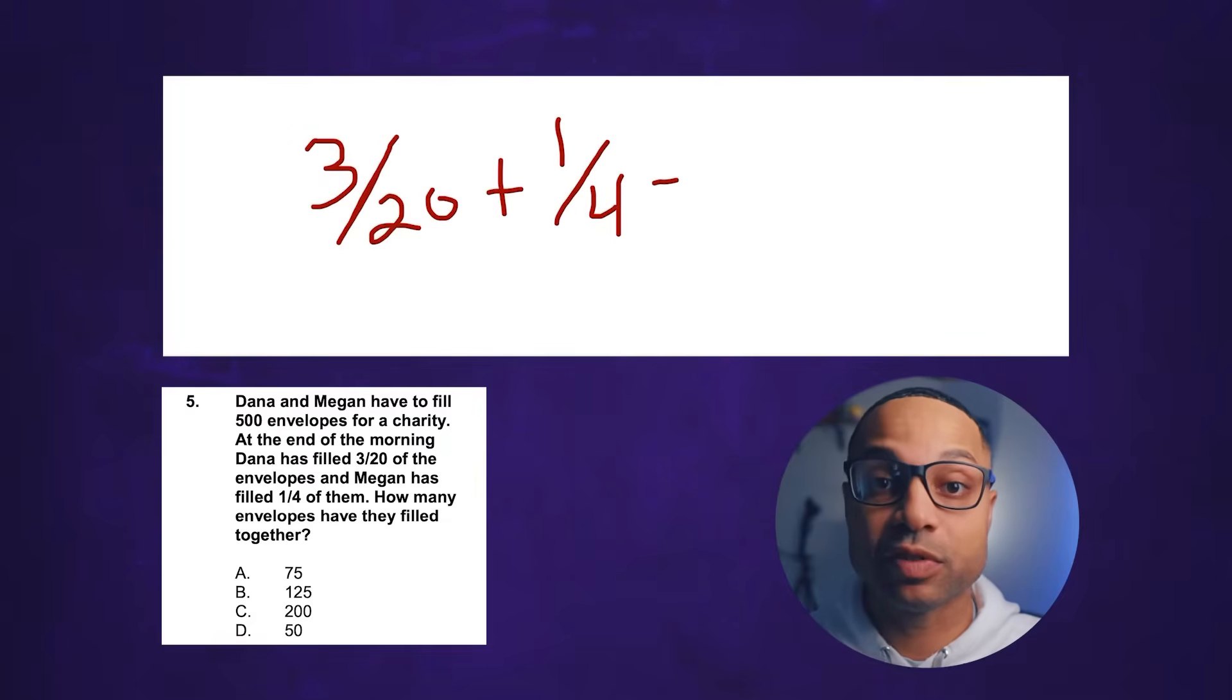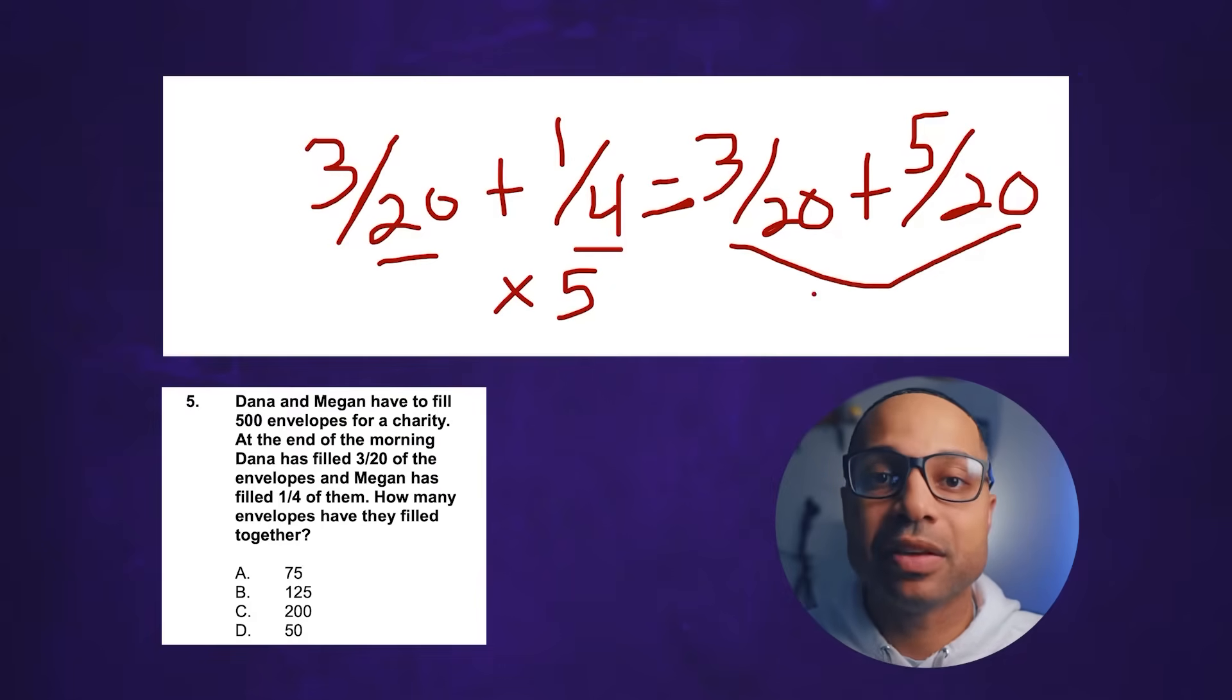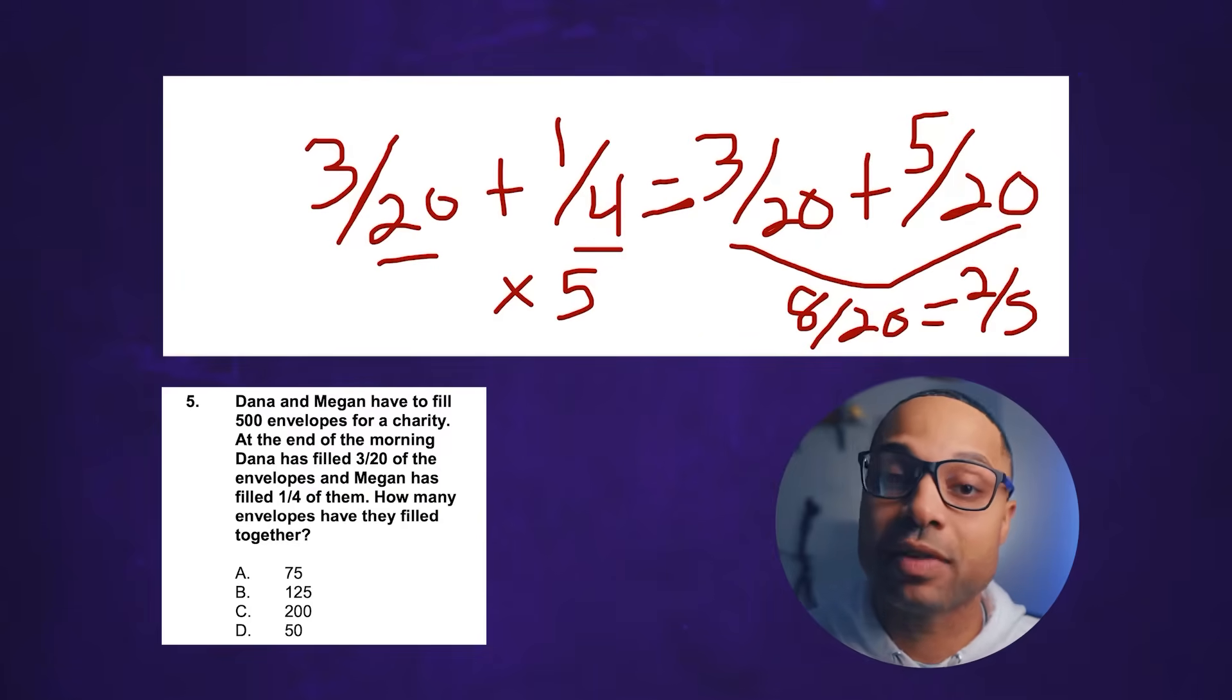So if you try to add 3/20 plus 1/4 it doesn't work. So you have to find a common denominator for each. The common denominator for 20 and 4 is going to be 20. In order to make 4 turn into 20 we have to multiply it by 5. Not only do we have to multiply the 4 by 5 we also have to multiply the 1 above it by 5. And if we do that we're going to have 5 over 20. Now because both bottom numbers are the same we can now add them and we'll get 8 over 20. Now 8 over 20 we can simplify it. 4 goes into 8 two times and 4 goes into 20 five times. So that breaks that fraction down to 2 over 5 which is 2 fifths.